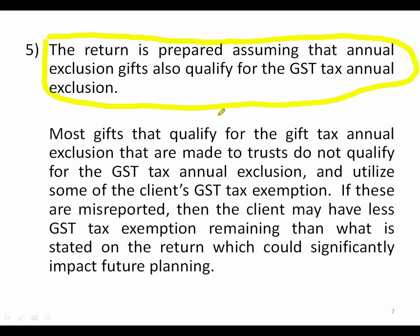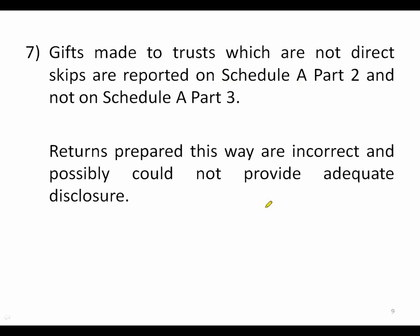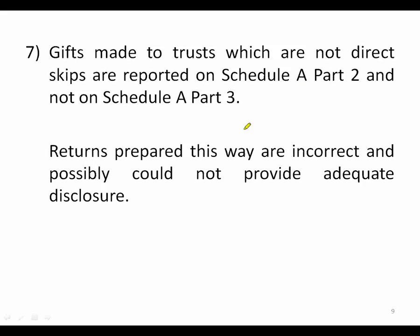When you make a gift to a trust, you need to either provide a copy of the trust or a brief description to satisfy adequate disclosure. Best practice is to provide the actual copy — a brief description might be inaccurate. Additionally, when a gift is made to a trust that's not solely for the benefit of grandchildren and more remote descendants, it should be reported on Schedule A Part 3, not Part 2. Misreporting on Part 2 could affect whether adequate disclosure is considered provided.